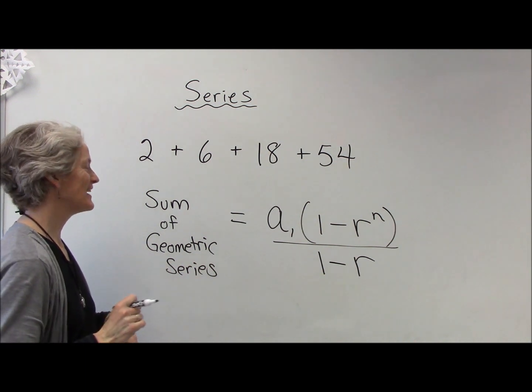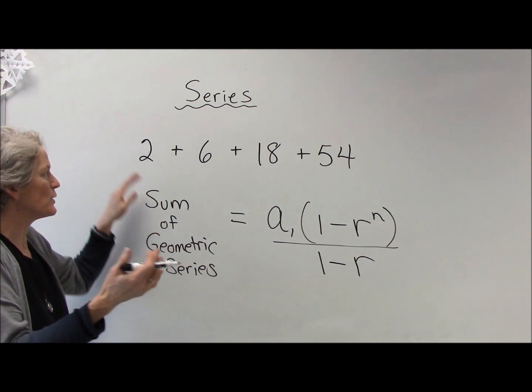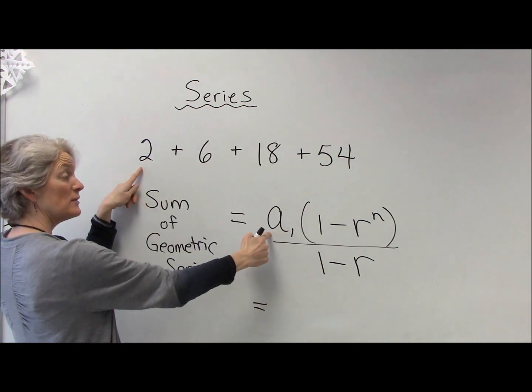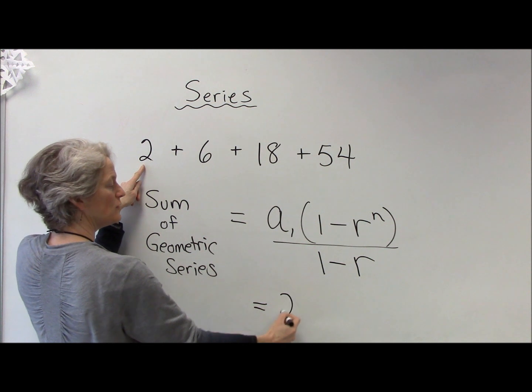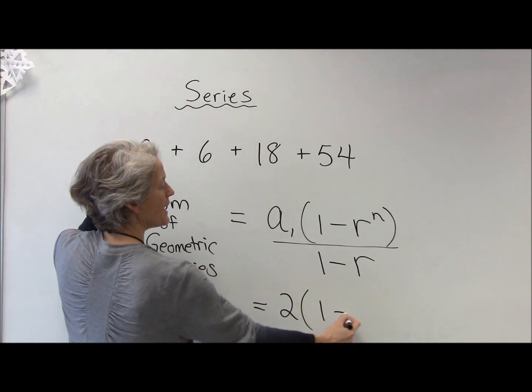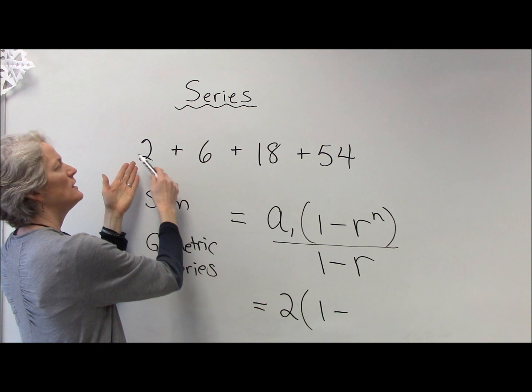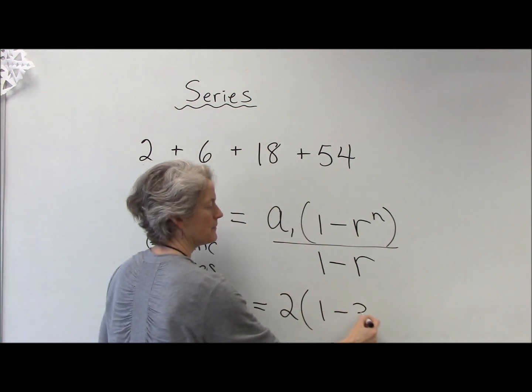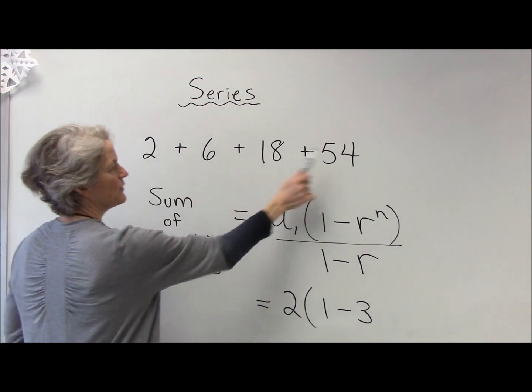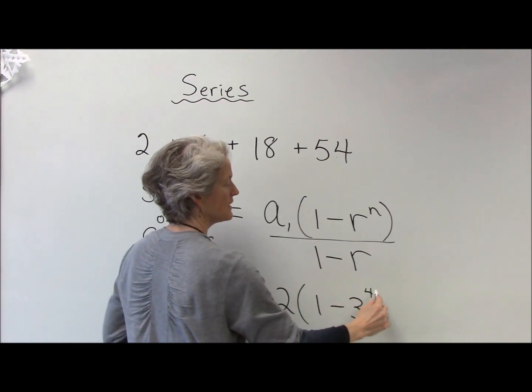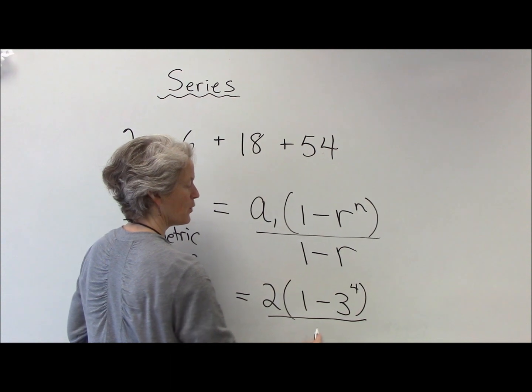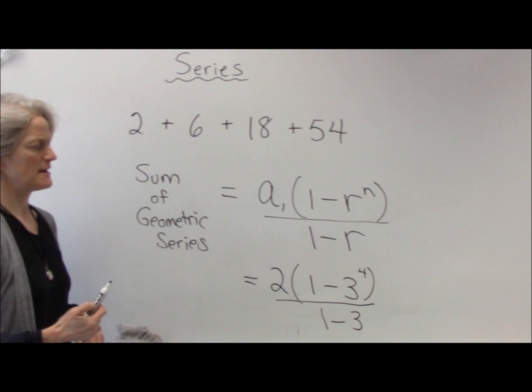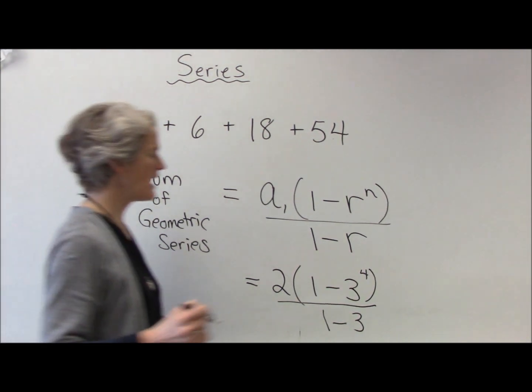All right, so let's just see that this works. If I wanted to find the sum of that geometric series, I would use the first term, which is 2, times 1 minus—okay, I have to figure out the common ratio. Well, 2 to 6, I multiplied by 3. And the number of terms: 1, 2, 3, 4. There are 4 terms, divided by 1 minus your common ratio.